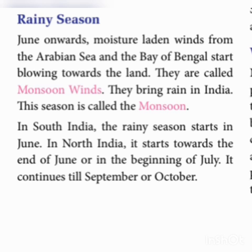In South India, the rainy season starts in June. In North India, it starts towards the end of June or in the beginning of July. It continues till September or October.